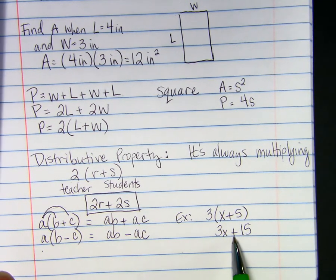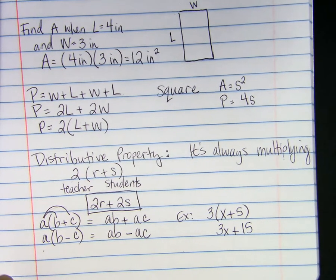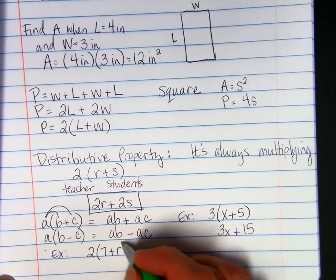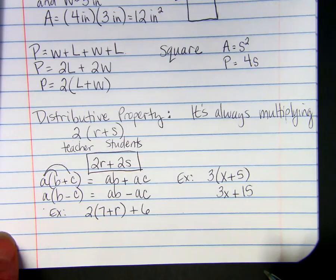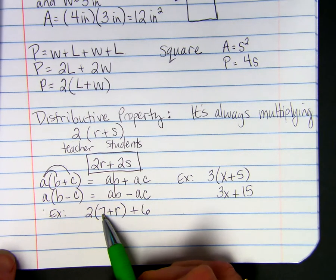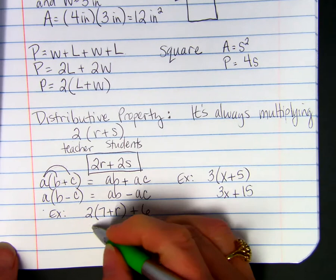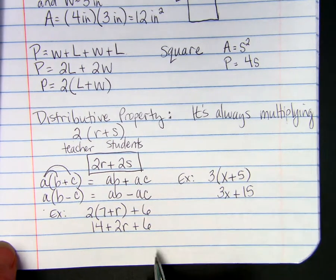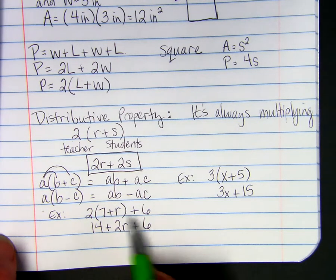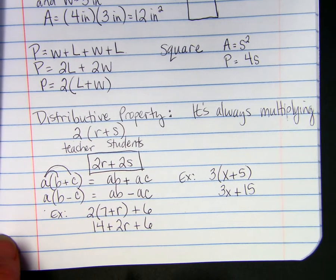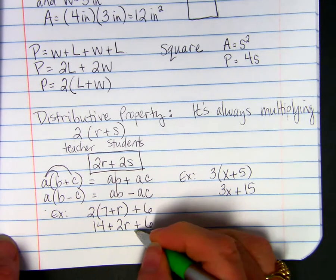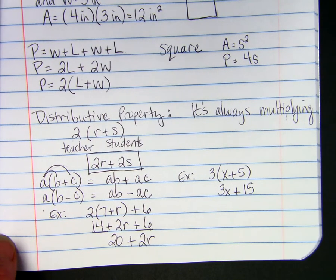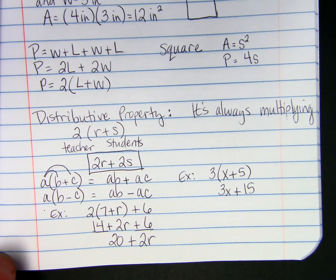Here's another example. Two and in parentheses, seven plus R, and then outside the parentheses, plus six. We're going to multiply the two times each of these terms. Two times seven is 14. Two times R is just two R. And then we add our six on the end. Because the six is not in the parentheses, we would not multiply it by two. Then we would do 14 plus six, because these are like terms. You want to add your like terms. So, it's 20 plus two R. And that's the end of the lesson.